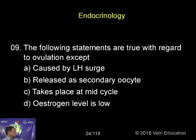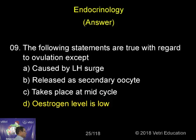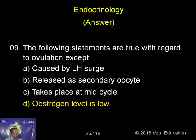Ovulation takes place at mid-cycle, which is the 14th day of the menstrual cycle. The two ovarian hormones that maintain the menstrual cycle are progesterone and estrogen.